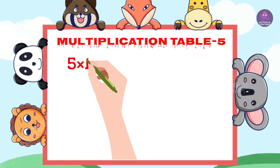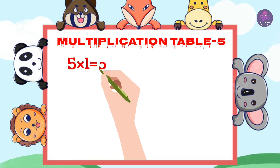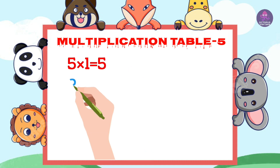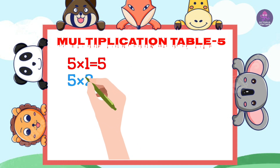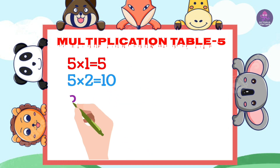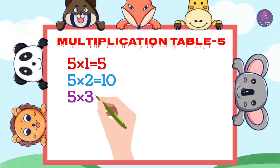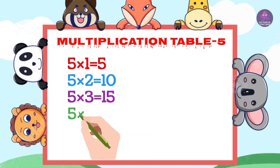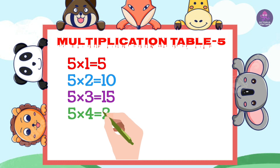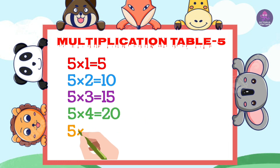5 1s are 5, 5 2s are 10, 5 3s are 15, 5 4s are 20, 5 5s are 25.